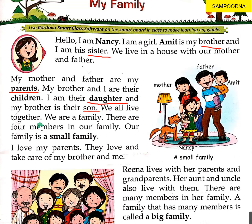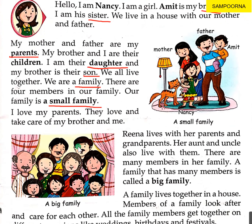We all live together. हम सब साथ में रहते हैं. We are a family. हम एक family हैं. Family means परिवार. There are four members in our family. हमारी family में four members हैं. Our family is a small family. जब आपके घर में four members या three members होते हैं तो वो आपकी small family होती है. ठीक है?